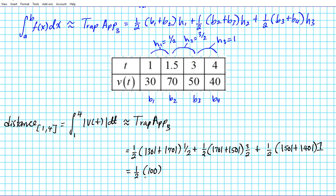So one fourth times 100 plus three halves times one half is three fourths, three fourths times 70 plus 50 is 120 plus half of 90.